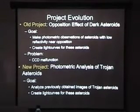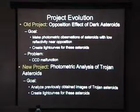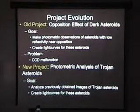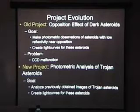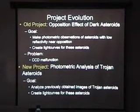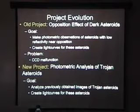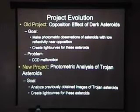My project went through big changes throughout my semesters working on it. Initially, the plan was for me to obtain the data myself using the university's telescope, and then to analyze them. I was going to take images of asteroids with low reflectivity at a point in their orbit where we could discern something about their surface roughness.